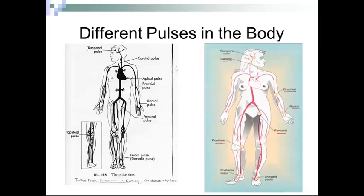There are different pulse sites in the body. The temporal artery is on the side just near the eyebrow. The carotid artery is just under the jawbone on the side of the neck. The brachial artery is on the inner side of the arm on the pinky side when the palm is up. The radial artery is just before the thumb on the thumb side. The popliteal is just behind the knee. The posterior tibial is just above the ankle. The dorsalis pedis is on top of the foot.